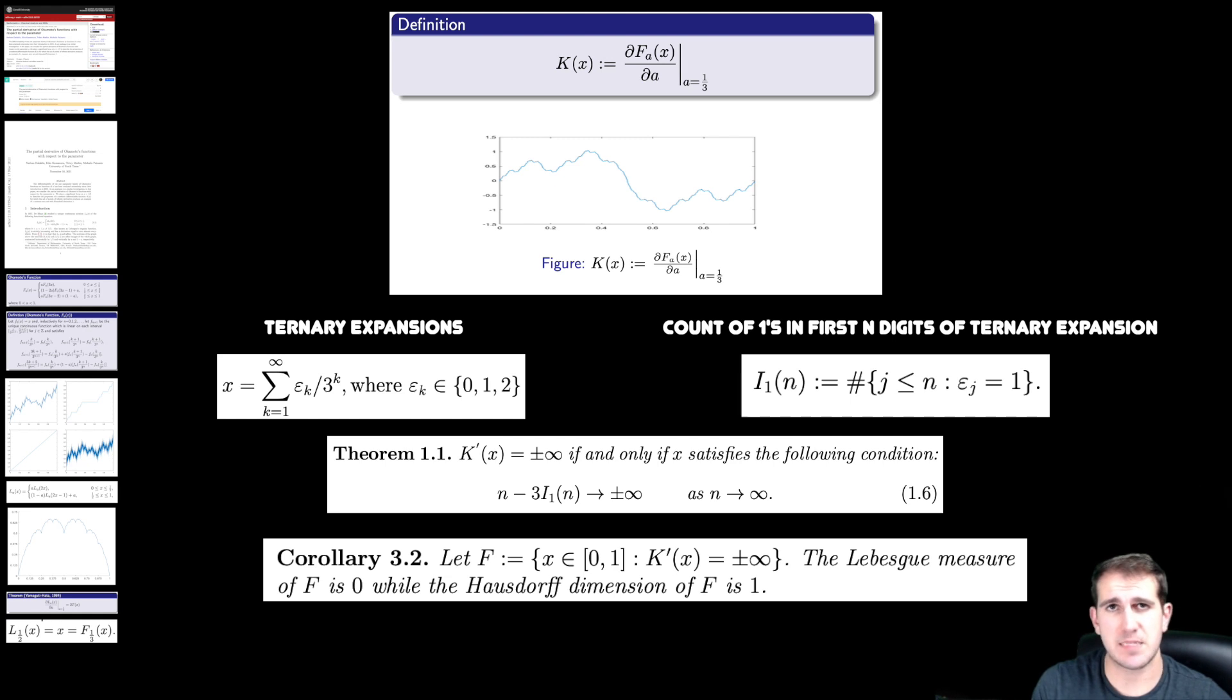There's a handful of different types of analysis and math that we encountered while working on this paper ranging from classical analysis to fractal geometry, measure theory, and a little bit of number theory that has to do with the digit distribution of numbers in a given expansion on the unit interval. So that was kind of interesting to see while working through the project.